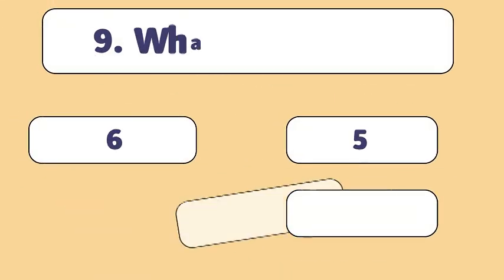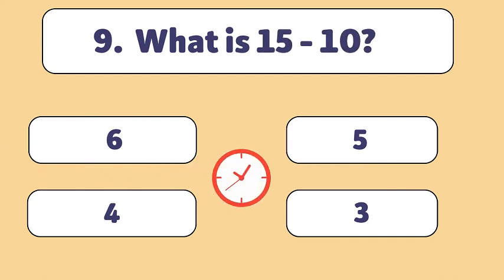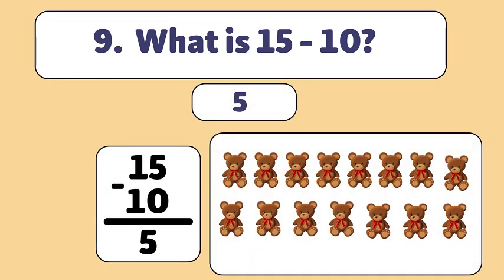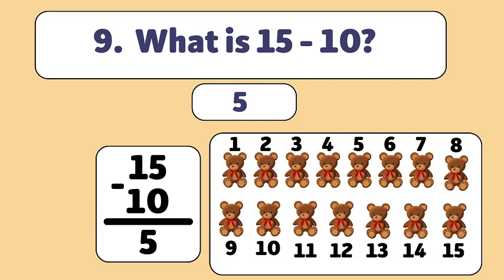What is 15 minus 10? The answer is 5. We start with 15 teddy bears and take away 10. Let's count: 1, 2, 3, 4, 5, 6, 7, 8, 9, 10. We have 5 teddy bears now.